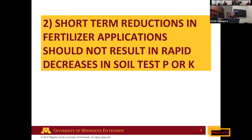The second key point: short-term reductions in fertilizer applications should not result in rapid decreases in soil test P or K. One fear growers have is that not applying fertilizer will quickly bottom out soil tests, but many soils had low values 30-40-50 years ago before fertilizer was extensively applied. With P and K, since we're not measuring everything in the soil test, depletion over time is a long-term process, though there are some seasonal and yearly fluctuations.